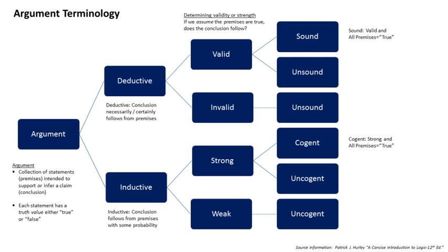The validity of an argument is not a guarantee of the truth of its conclusion. Under a given interpretation, a valid argument may have false premises that render it inconclusive. The conclusion of a valid argument with one or more false premises may be either true or false. Logic seeks to discover the valid forms — the forms that make arguments valid. A form of argument is valid if and only if the conclusion is true under all interpretations of that argument in which the premises are true. An argument can be shown to be invalid by showing that its form is invalid, which can be done by giving a counter-example. In informal logic, this is called a counter-argument.